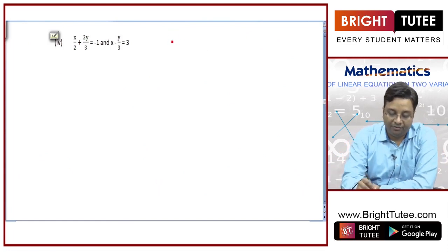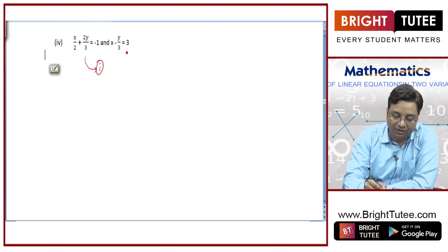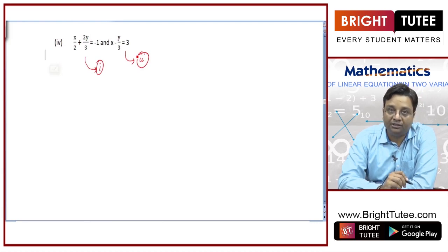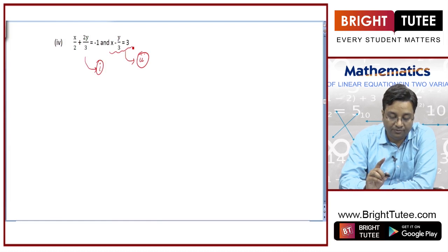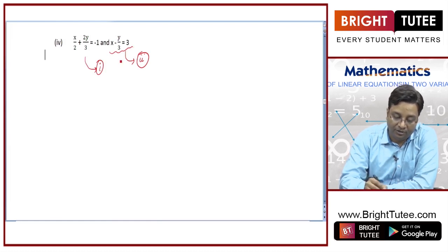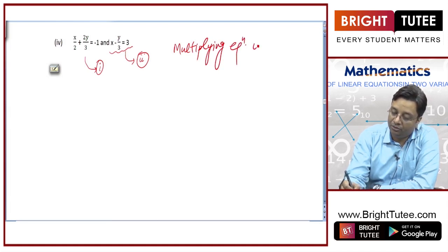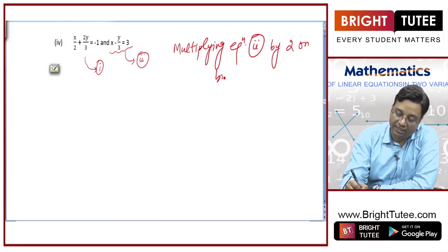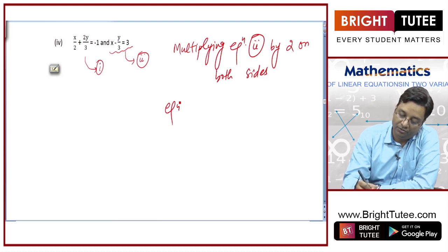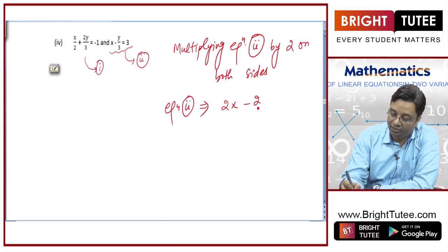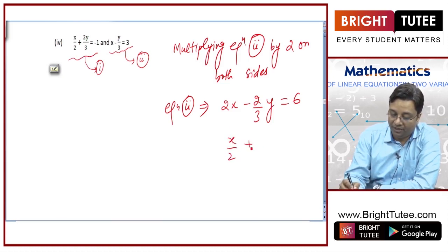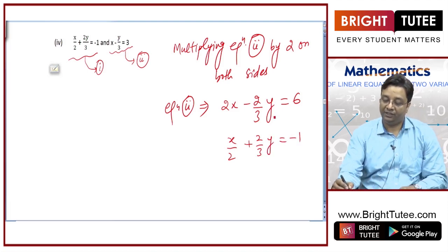Look at these equations: x by 2 plus 2y by 3 equal to minus 1. Let us say this is equation number 1, and the other is equation number 2. So, which coefficients should we equate? We can simply multiply equation number 2 by 2 to equate the coefficients of y. So, multiplying equation number 2 by 2 on both sides.